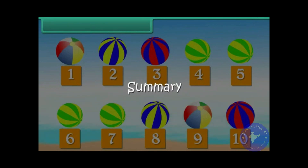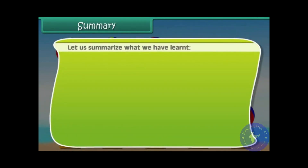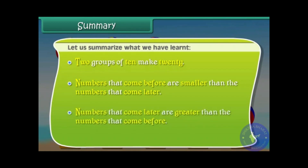Summary. Let us summarise what we have learnt. Two groups of 10 make 20. Numbers that come before are smaller than the numbers that come later. Numbers that come later are greater than the numbers that come before.